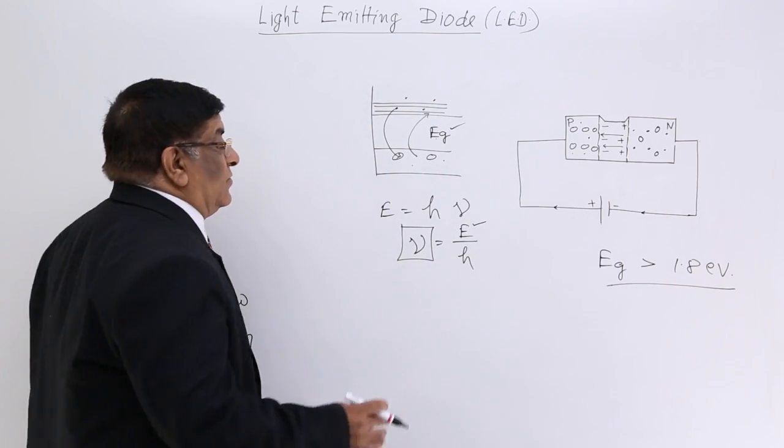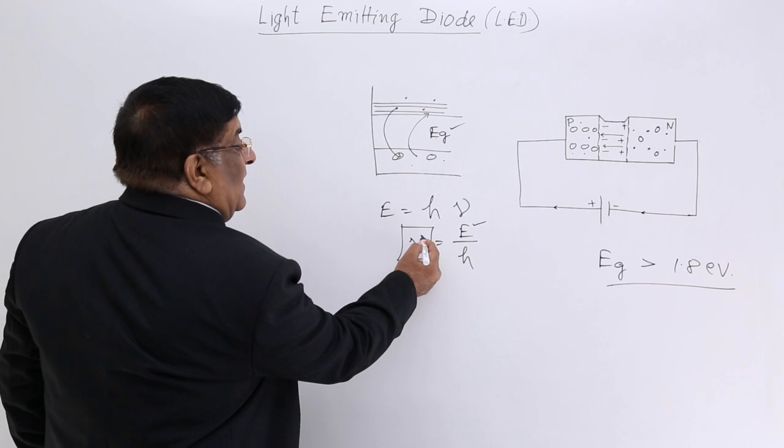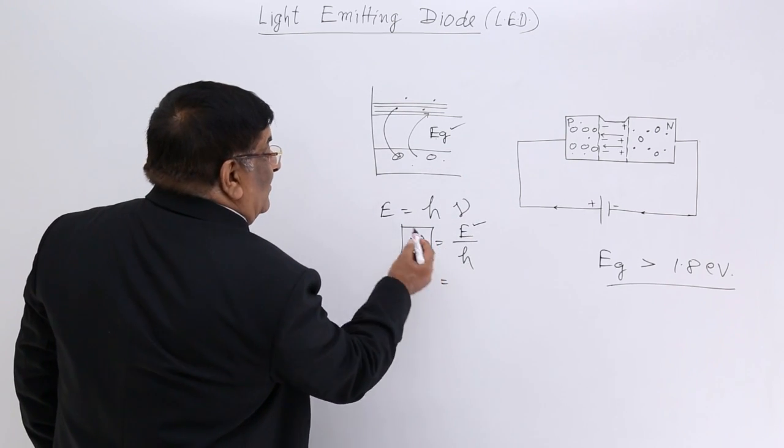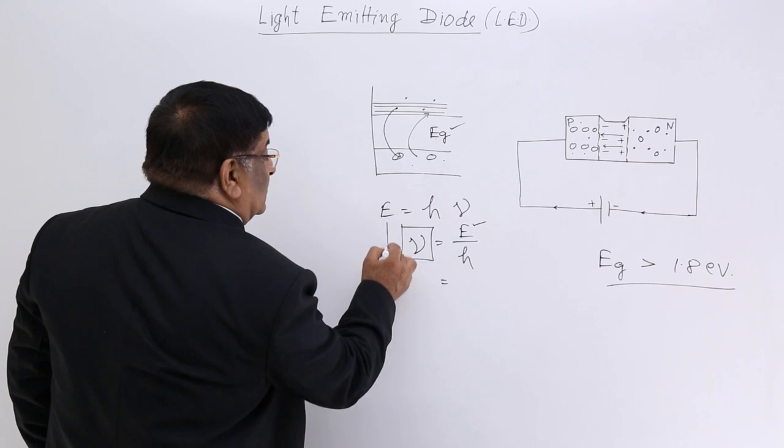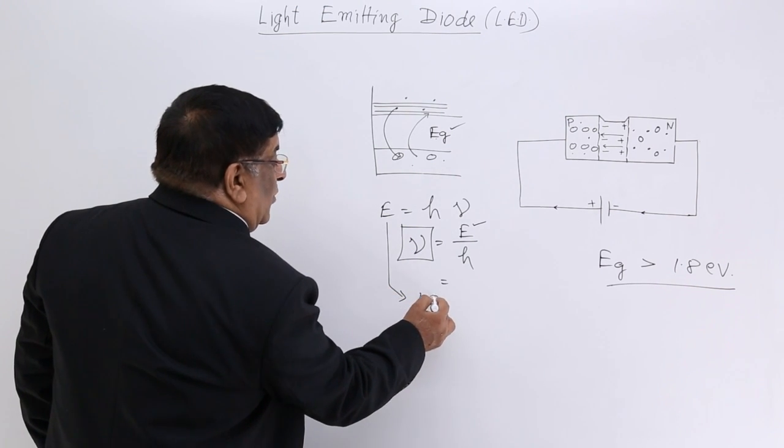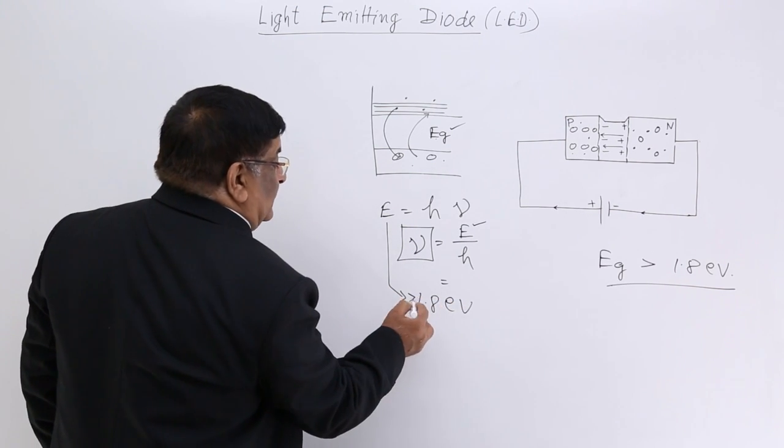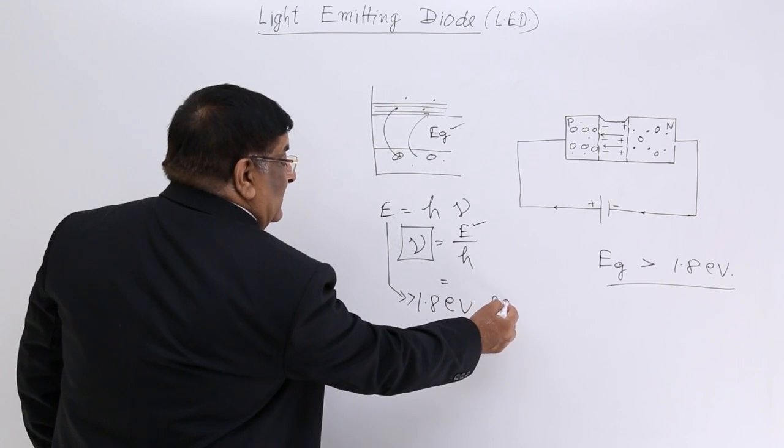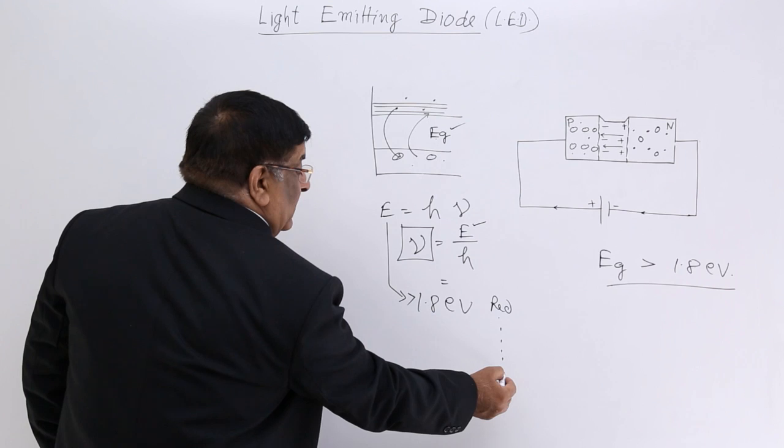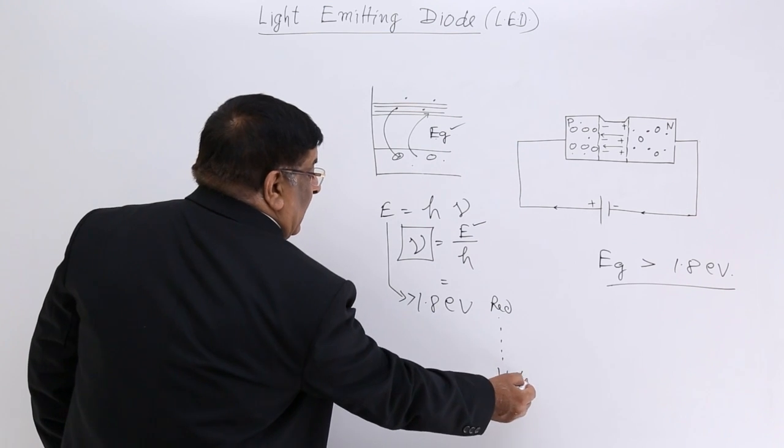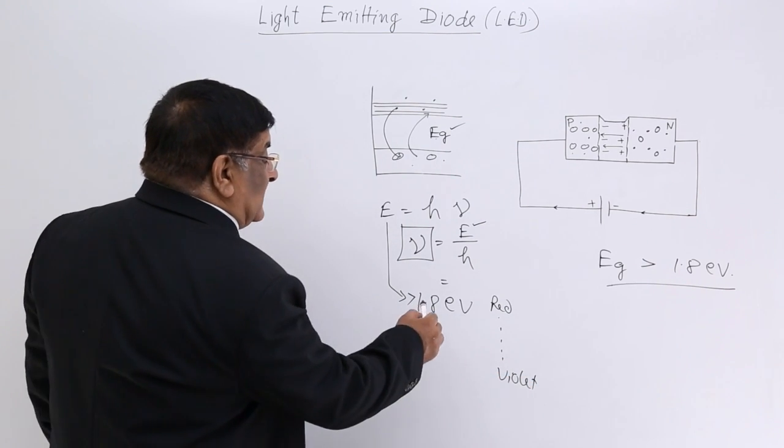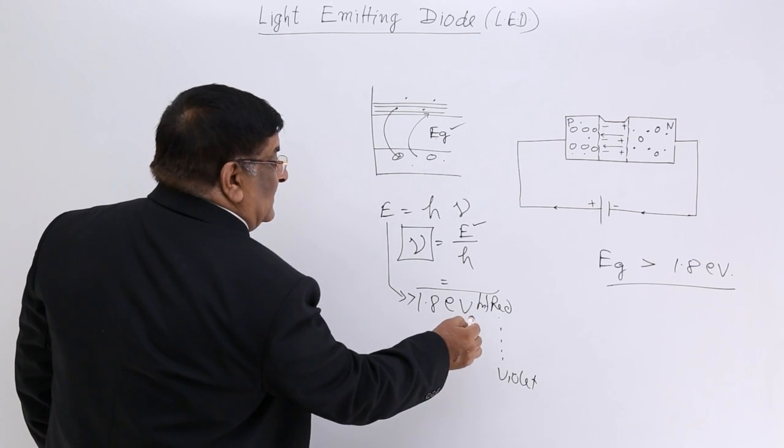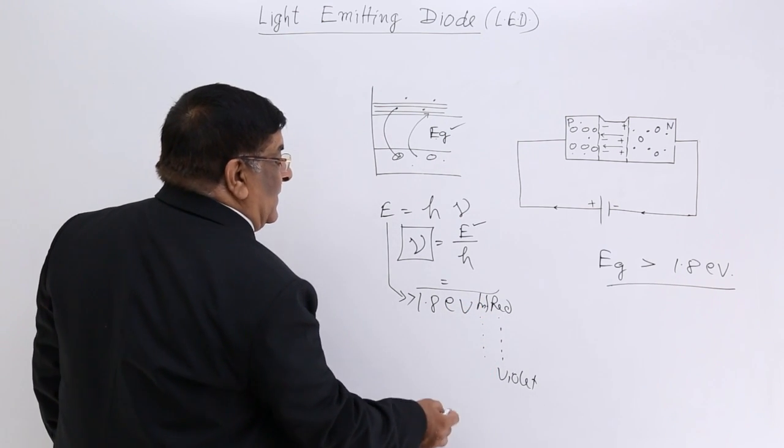If we want to see it, it should have a frequency which is equal to visible light frequency. And when I put this value of frequency of visible light, I find that this energy gap E comes to be more than 1.8 electron volt. So this is red, more is the energy required for blue, and more is required for violet, less than this is infrared, after this red starts.